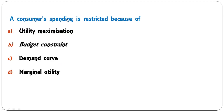Next question: 'A consumer's spending is restricted because of' — utility maximization, budget constraint, demand curve, or marginal utility? A consumer's spending capacity depends on income, and that is nothing but budget constraint. So consumers' spending is restricted depending on budget constraint; B is the correct answer.